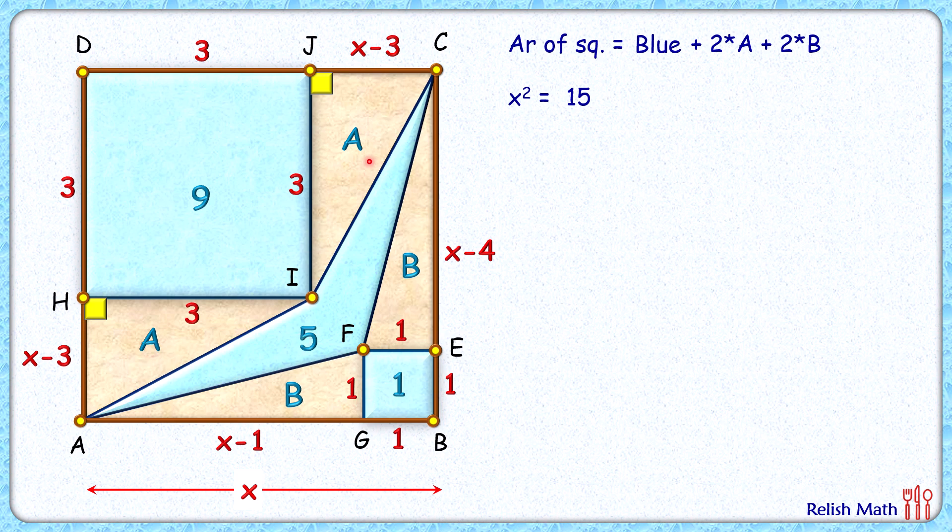Area A is half of base into height, so two times that gives us 2 times 1/2 times 3 times (x minus 3). Same way for area B, it's two times 1/2 times (x minus 1) times 1. Simplifying, the twos cancel out.